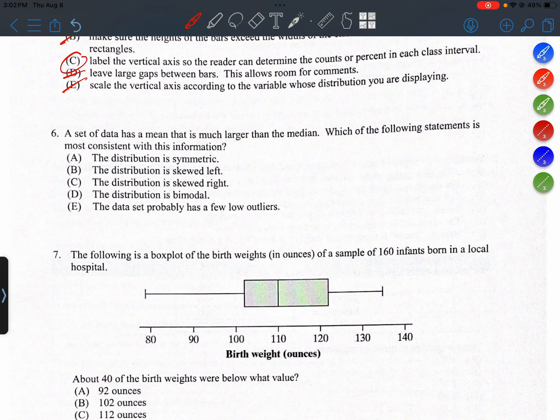So if you have a low outlier, the mean is going to get pulled down. A high outlier, the mean will get pulled up. Or if you just have extreme values on the high side, then the mean is going to get pulled up.